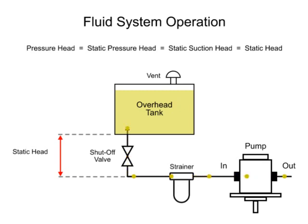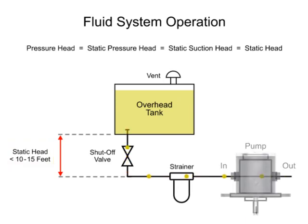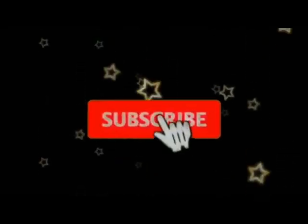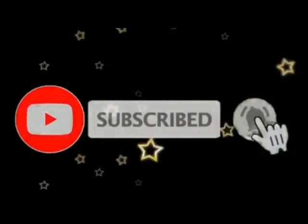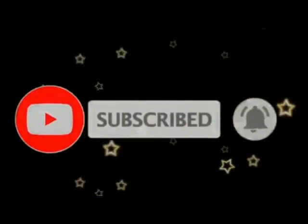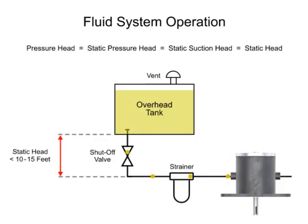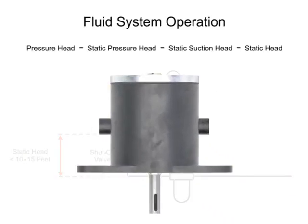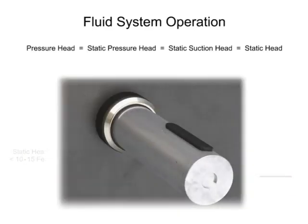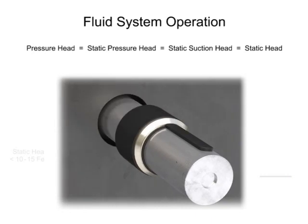Most pumps will tolerate only a small amount of positive inlet pressure, usually less than 15 psi, so elevation of the reservoir should not exceed 10 to 15 feet above the pump. If the reservoir is placed too high, the increase in inlet pressure can blow out the shaft seal of most pumps.